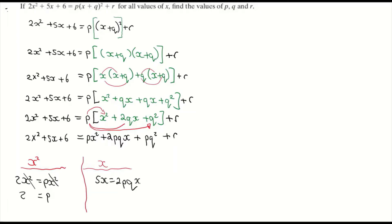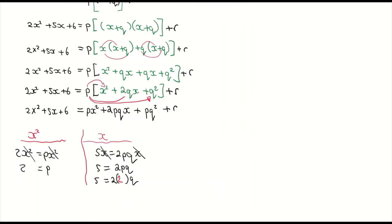Dividing both sides by x gives 5 = 2pq. Substituting p = 2: 5 = 2 times 2 times q, so 5 = 4q. Therefore q = 5/4, which is 1.25.